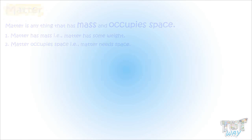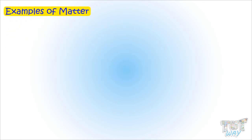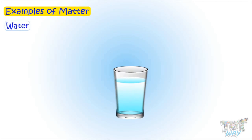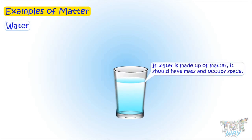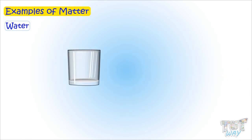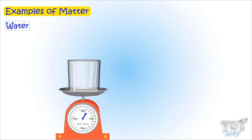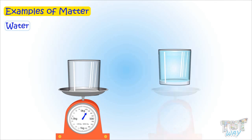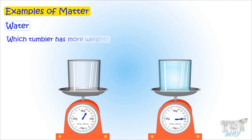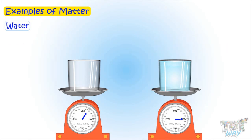Let's take an example to prove it. We learned that everything is made up of matter, so let's take a few things and see if they are made up of matter. First is water. We have to see if water is made up of matter — it should have mass and occupy space. Take an empty tumbler and weigh it. Now fill it with water and again weigh it. The filled tumbler has more weight.